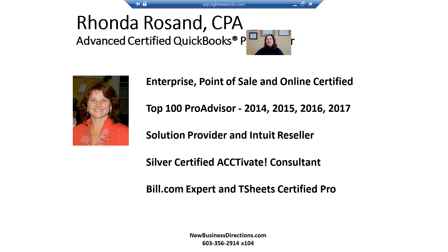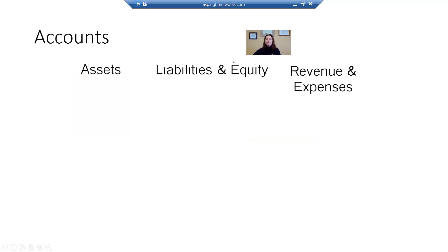So let's talk about the different accounts in QuickBooks. There are 15 different types of accounts in QuickBooks, and they are in three main categories: the assets, the liabilities and equity, and the revenue and expenses. Your balance sheet is made up of your asset accounts, your liability accounts, and your equity accounts. Your profit and loss report is made up of revenue and expense accounts.